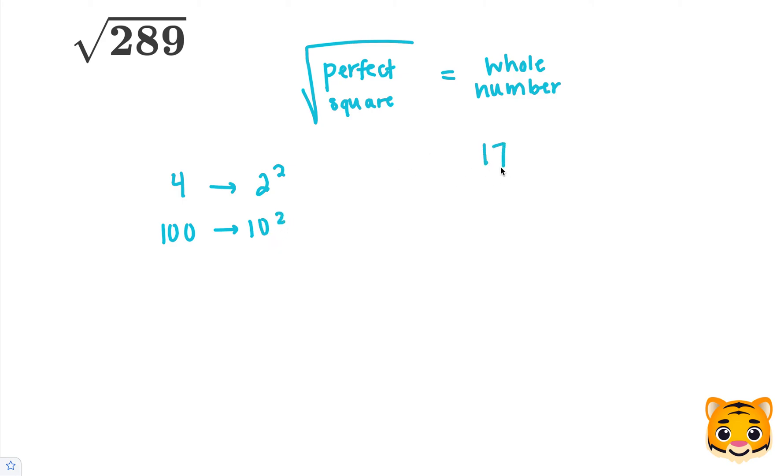289 comes from 17 times 17. Let's multiply this together.